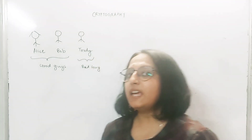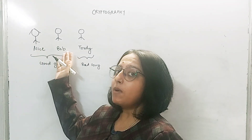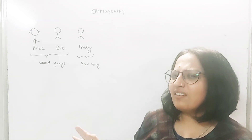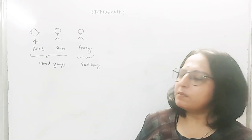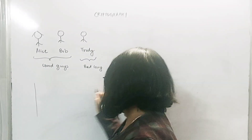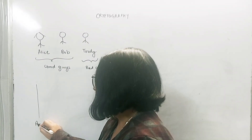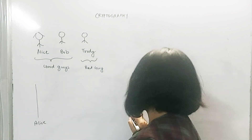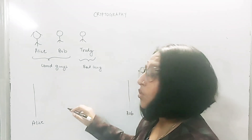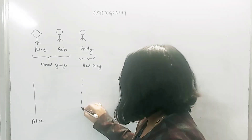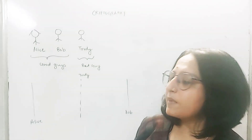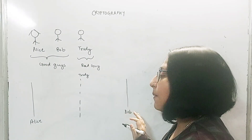Now let us see why Trudy is the bad guy. Alice and Bob are best friends and Trudy is jealous of their friendship, so every now and then Trudy tries to create problems. This happens again one fine day when Alice and Bob are chatting, and the channel through which they are chatting is not secure.